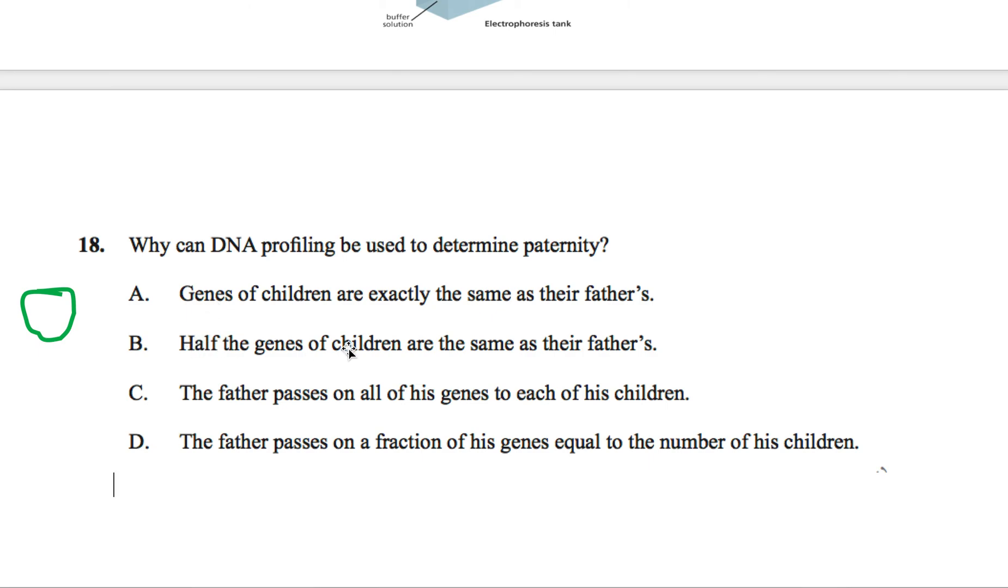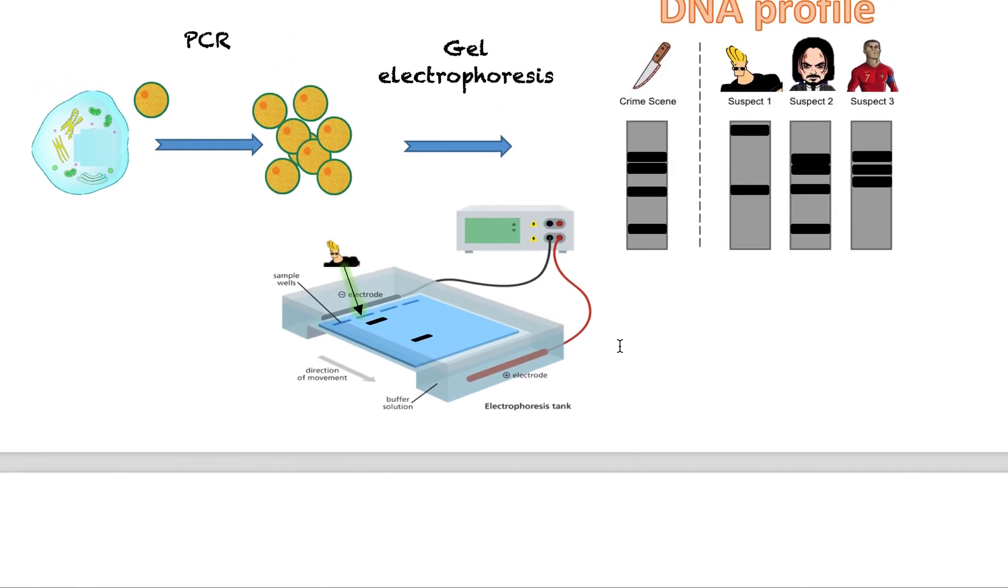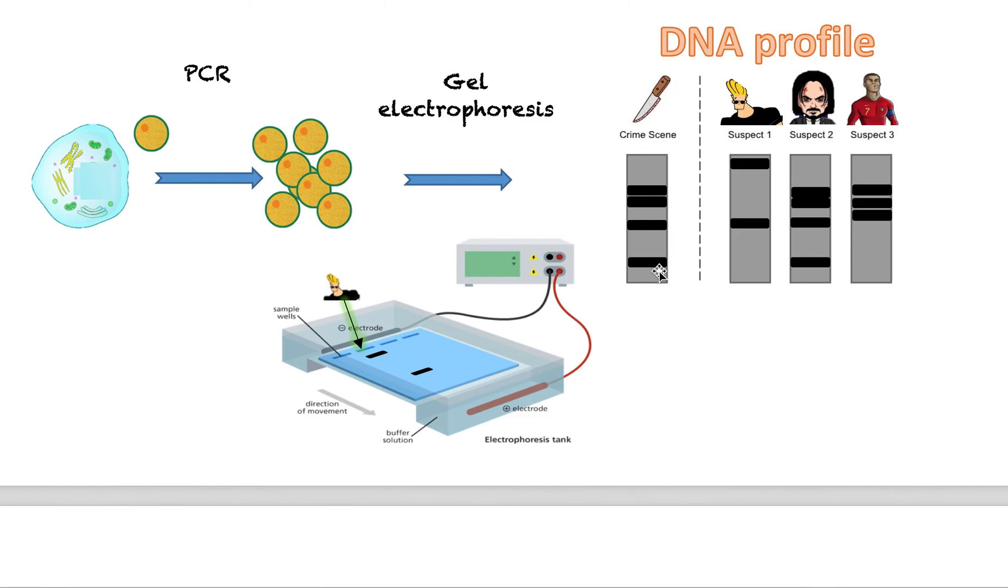B, half the genes of children are the same as their fathers. So this is true because your mother and your father when they reproduce, they pass on half of their DNA each because half and half will make a whole and so you will have all the DNA you need. So this one is correct. So this is why DNA profiling can be used to determine paternity because your genetics is half the same as your father's and so this result, your DNA profiles will be very similar to each other and so it will match.